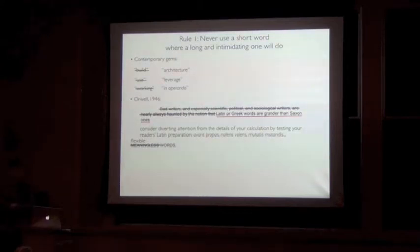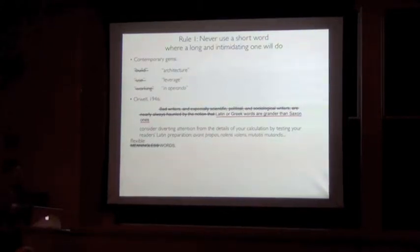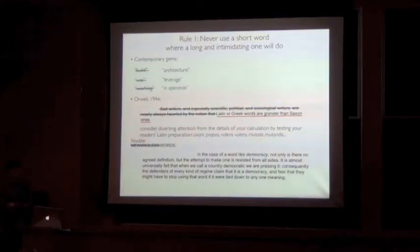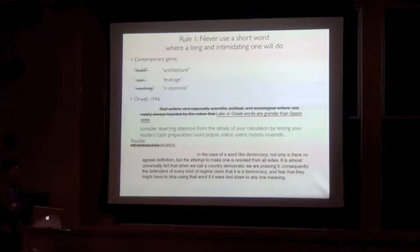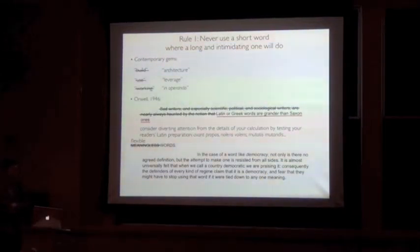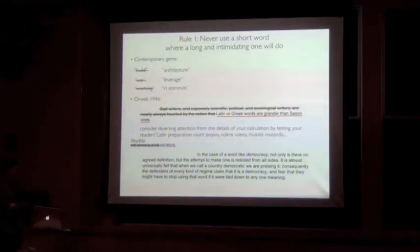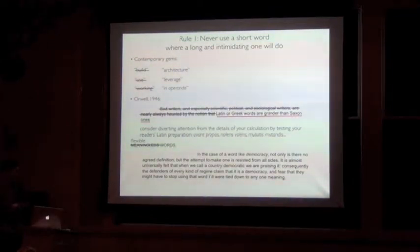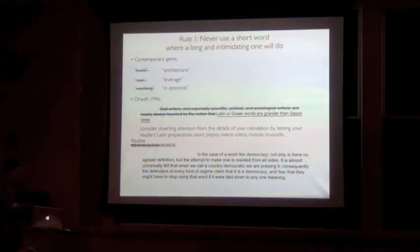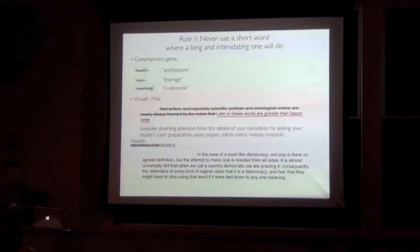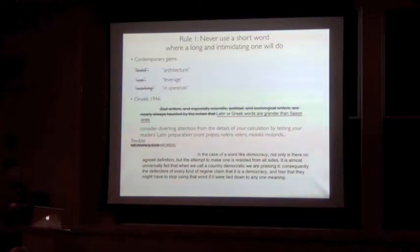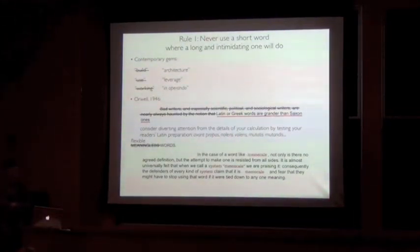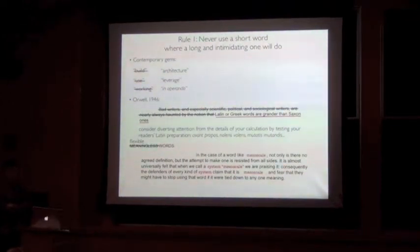Orwell also writes about meaningless words. It's a little harsh. Flexible may be a better description for our purposes. So he says, in the case of a word like democracy, not only is there no agreed definition, but the attempt to make one is resisted from all sides. It's almost universally felt that when we call a country democratic, we're praising it. And consequently, the defenders of every kind of regime claim that it's a democracy. We fear that they might have to stop using that word if it were tied down to any one meaning. So in science nowadays, we're fortunate to have ready-made alternatives to drop straight into place. Consider using these.